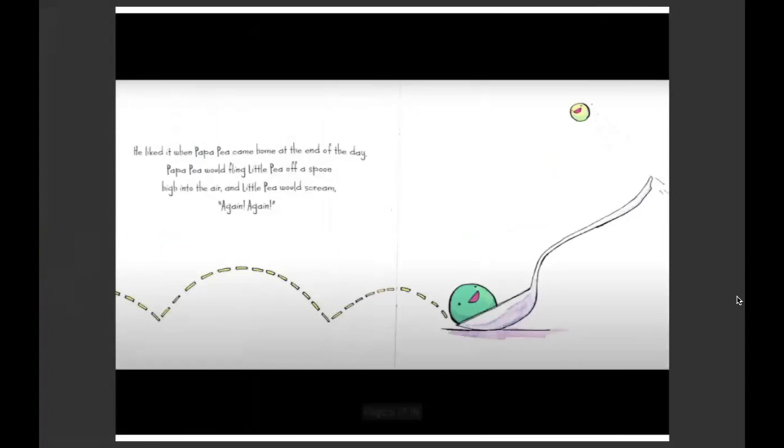He liked it when Papa P came home at the end of the day. Papa P would fling Little P off a spoon, high into the air, and Little P would scream, again, again. There's Little P, he's flying off the end of the spoon.